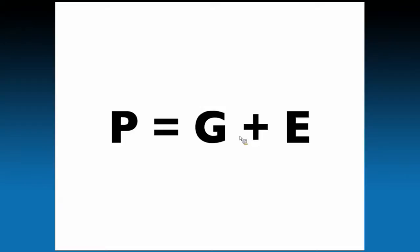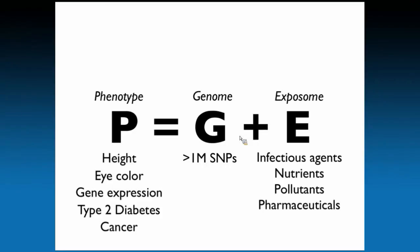Very simply, phenotypes — clinical traits, things that make up who we are — can be summarized as a combination of genes and environment. But this simple conceptualization is not so simple under the hood. There are many phenotypes that actually make up who we are, including things like height, eye color, gene expression of 30,000 or so genes, and diseases such as type 2 diabetes and cancer.